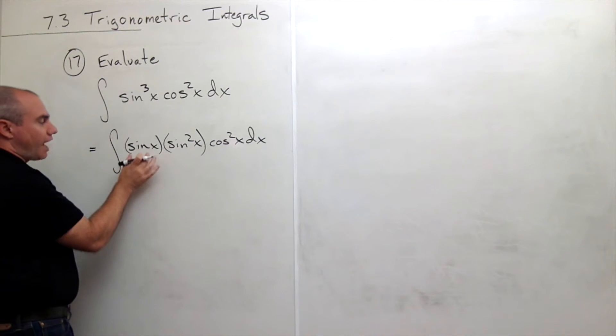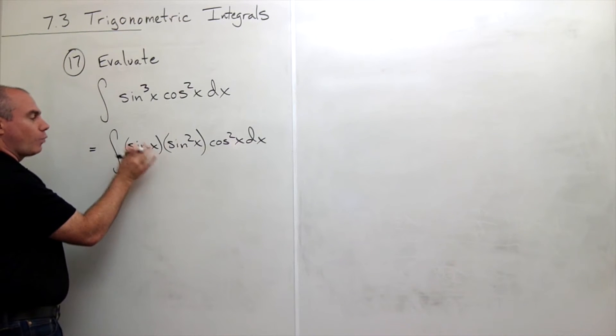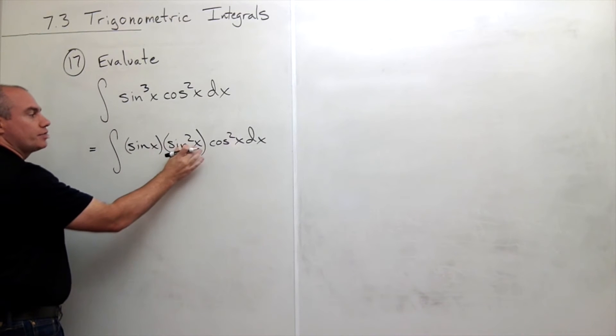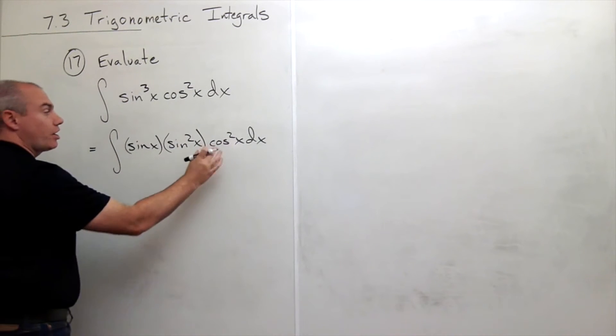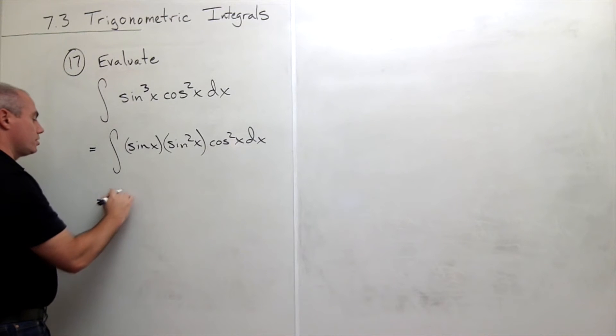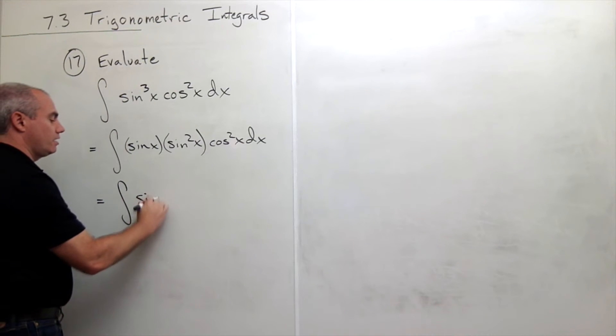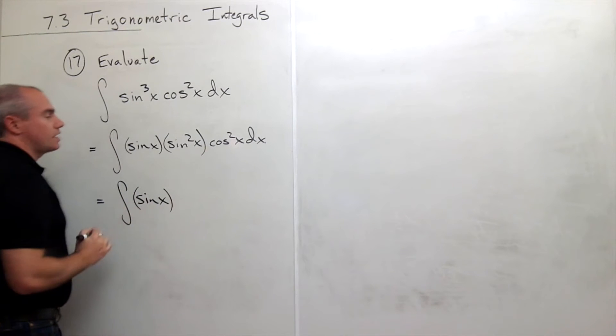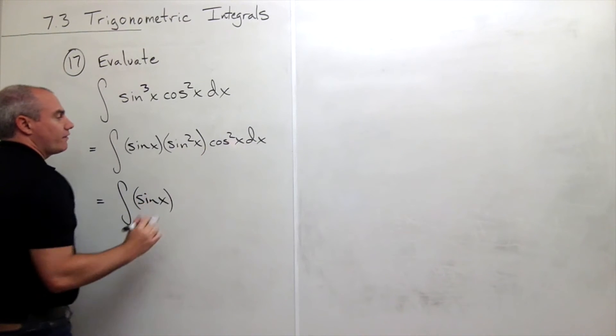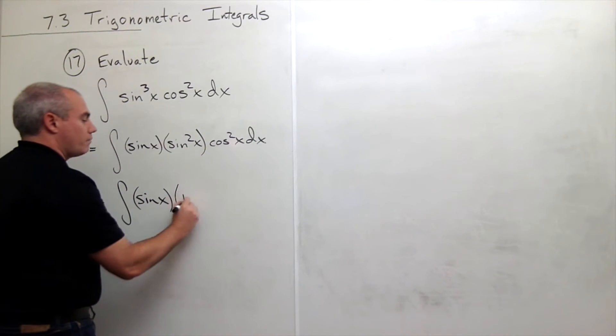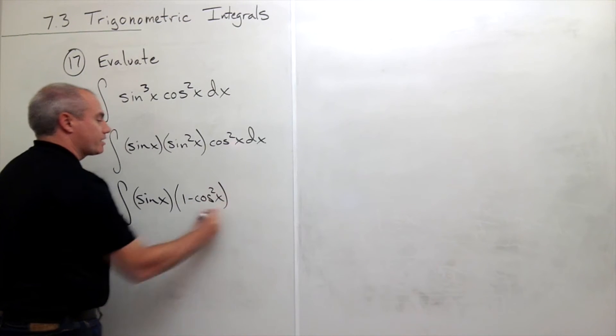Now I broke off my one sine, I want to leave it alone. Let's turn all the other sines into cosines. So we write this as the integral of sine of x times sine squared of x, which could also be written as one minus cosine squared of x.